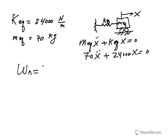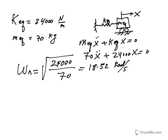Therefore, the natural frequency would be square root of K equivalent divided by mass equivalent, which happens to be about 18.52 radians per second.